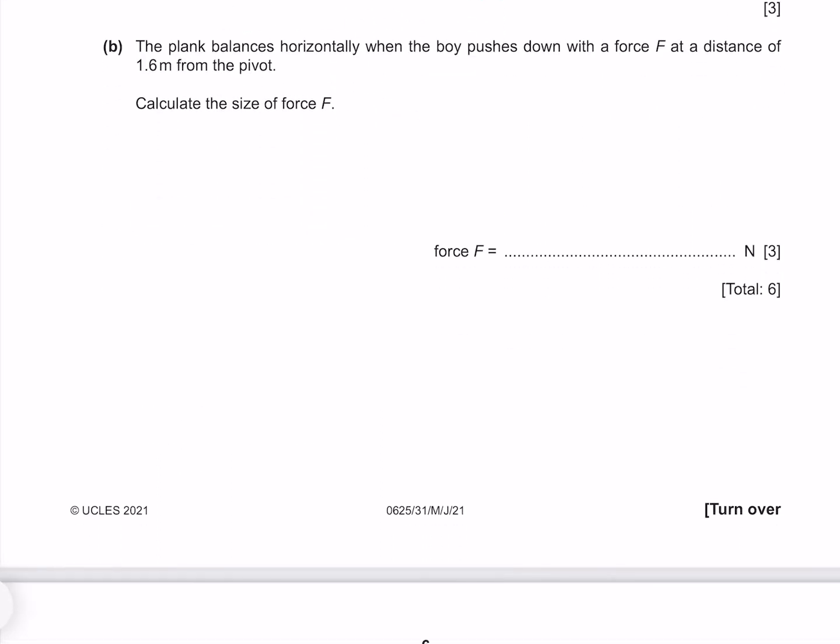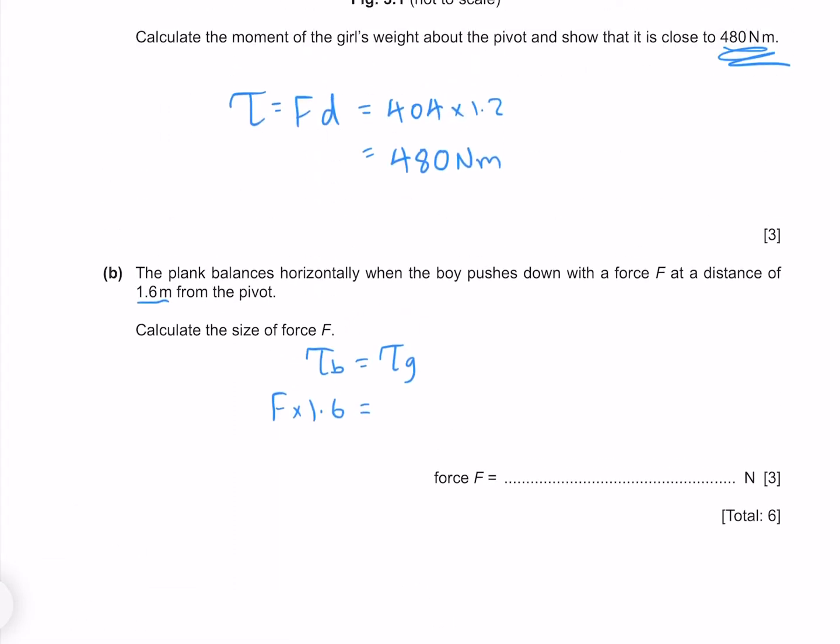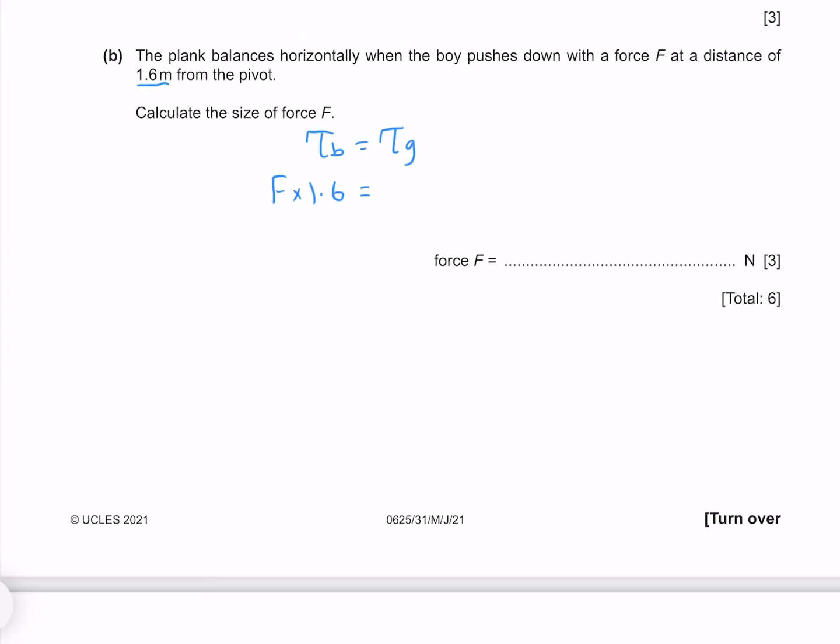The plank balances horizontally when the boy pushes down with a force F at a distance of 1.6 metres from the pivot. Calculate the size of the force. Because the plank is balancing, we know that the moment of the boy must equal the moment of the girl. The moment of the boy is his force times his distance of 1.6, and the moment of the girl is what we found earlier, our 480. Solving this for force by dividing both sides by 1.6 gives me 300 newtons.